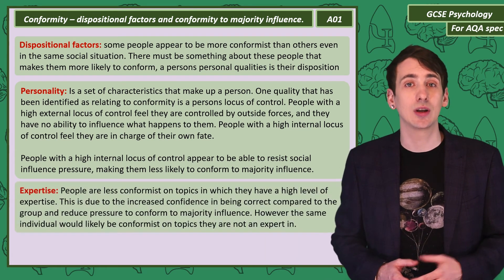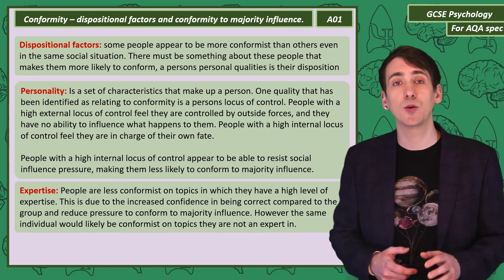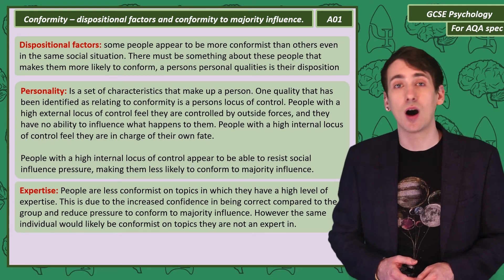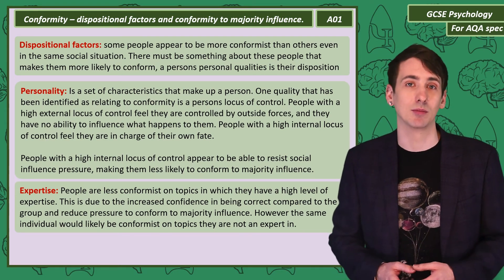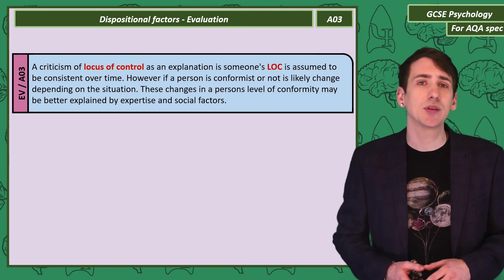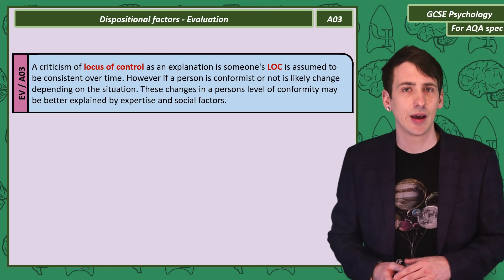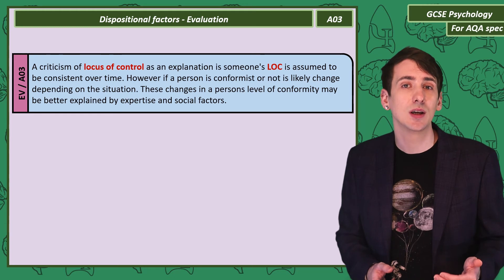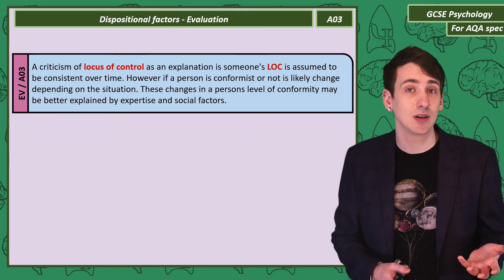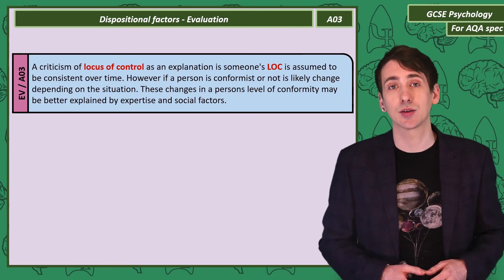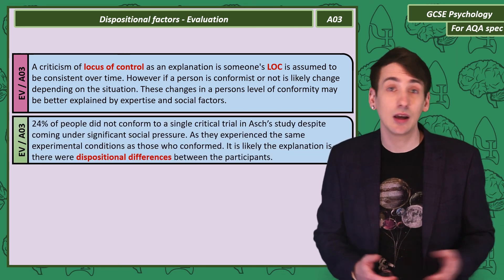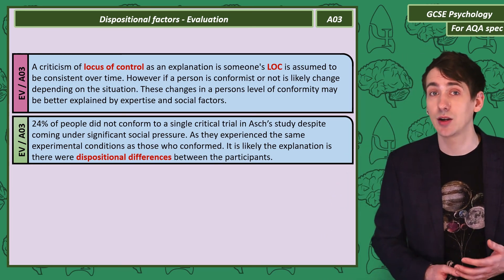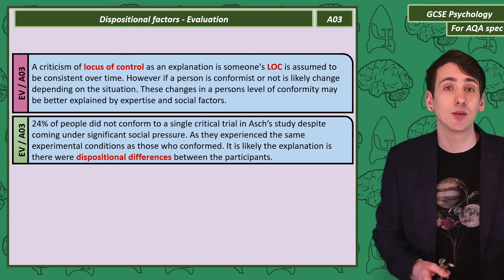Another aspect of disposition is level of expertise. The more confident someone is with a topic, the less conformist they are likely to be, but they are likely to be conformist in areas where they are not an expert. A criticism of locus of control is that people tend to be more conformist in some situations than others, yet a person's locus of control is thought to be stable. Changes in conformity might be better explained by levels of expertise and the social factors identified by Asch. A positive evaluation of dispositional factors is that it explains the behaviour of people who don't conform on a single trial of Asch's study — they experience the same social pressure as those who weren't able to resist.